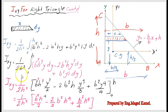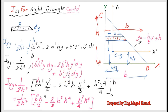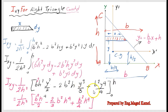All multiplied by 1/(2h²). We now integrate term by term: ∫y·dy = y²/2, ∫y²·dy = y³/3, and ∫y³·dy = y⁴/4. Substituting limits from y = 0 to y = h, we get Ixy = 1/(2h²) times [b²h²·(h²/2) - 2b²h·(h³/3) + b²·(h⁴/4)].